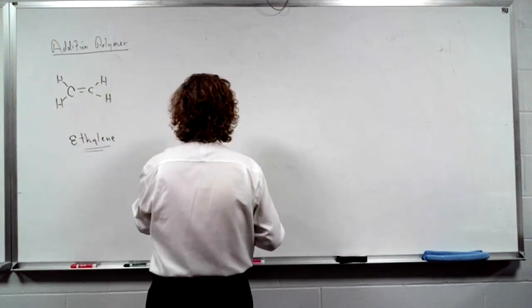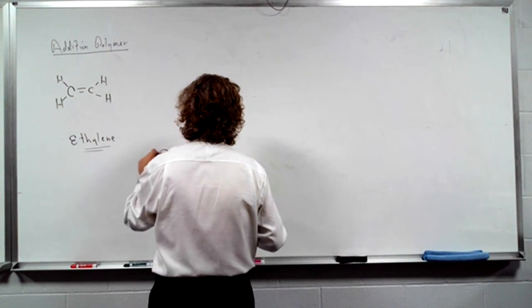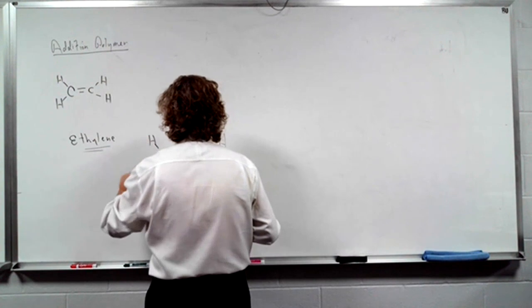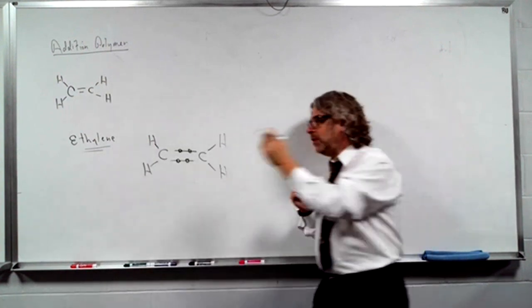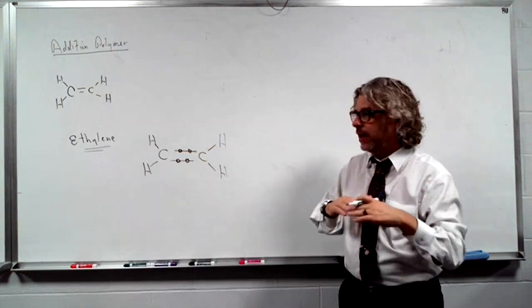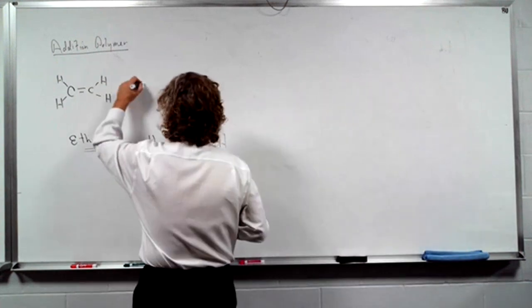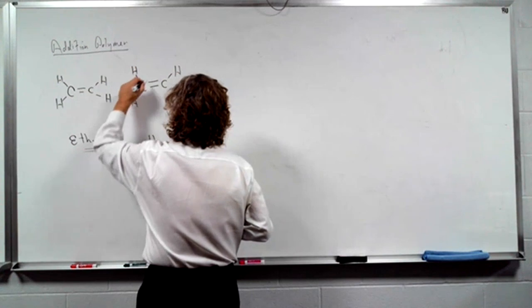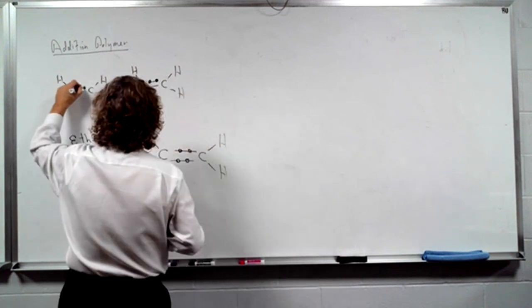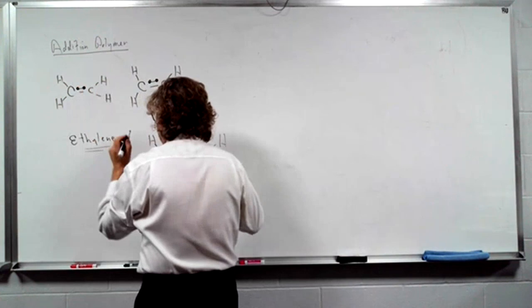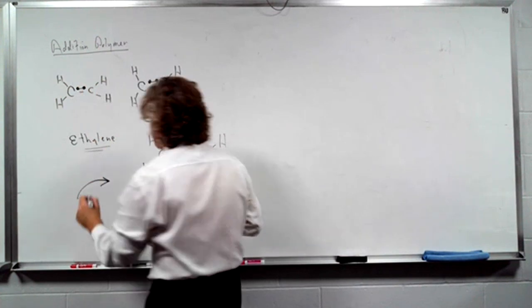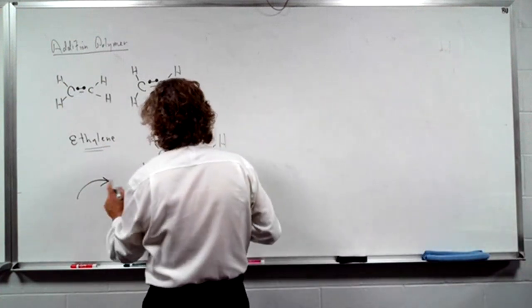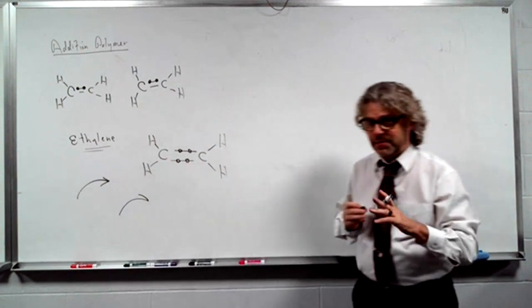Now what do we have, when you've got a double bond, you've got four electrons. If you got rid of all four electrons, you wouldn't have a bond, but if you left two electrons and took two out, you'd have a single bond.